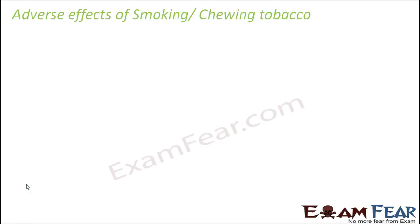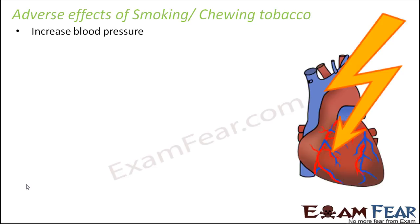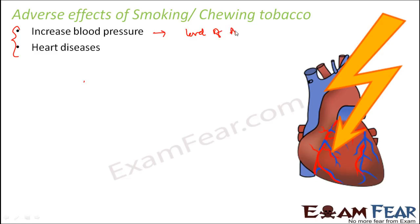Some of the adverse effects of smoking or chewing tobacco: smoking or chewing tobacco can increase blood pressure. Tobacco contains nicotine, and this nicotine activates the adrenal glands to release the hormone adrenaline. The purpose of adrenaline is to increase blood pressure. When a lot of adrenaline or noradrenaline is released, blood pressure increases. When blood pressure increases, the risk of heart diseases also increases, because hypertension, blood pressure, and heart diseases are all related to each other.